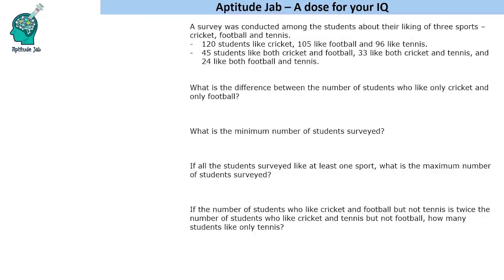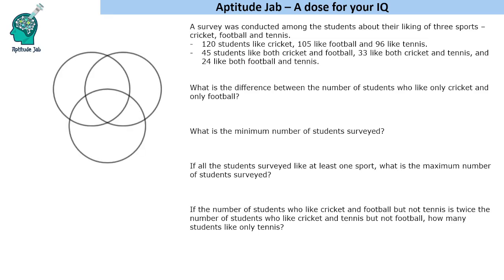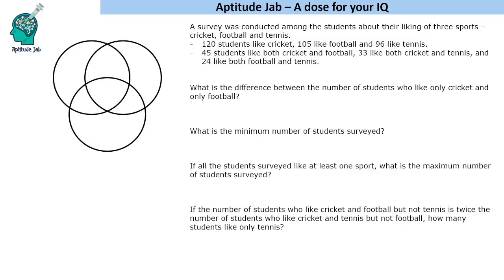Hello everyone, welcome to Aptitude Jab. This is a question on Venn diagrams which says that a survey was conducted among students about their liking of three sports: cricket, football, and tennis. 120 students like cricket, 105 like football, and 96 like tennis. 45 students like both cricket and football, 33 like both cricket and tennis, 24 like both football and tennis, and it is followed by four questions. So let us make the Venn diagram first.